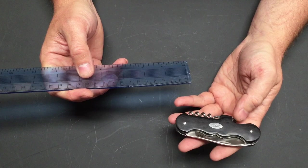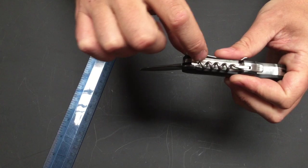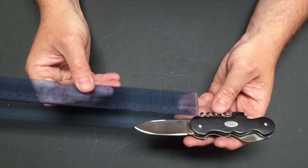If you open the main blade, what we've got on that is your typical slip joint mechanism. There's your spine snapping and holding it open, and we'll have a quick measure of the blade.